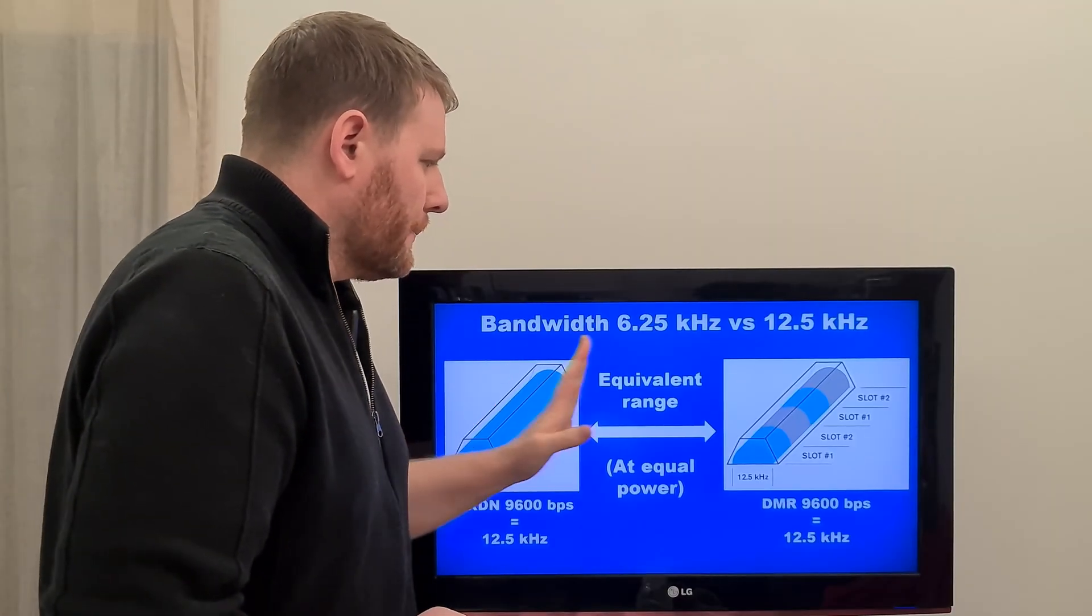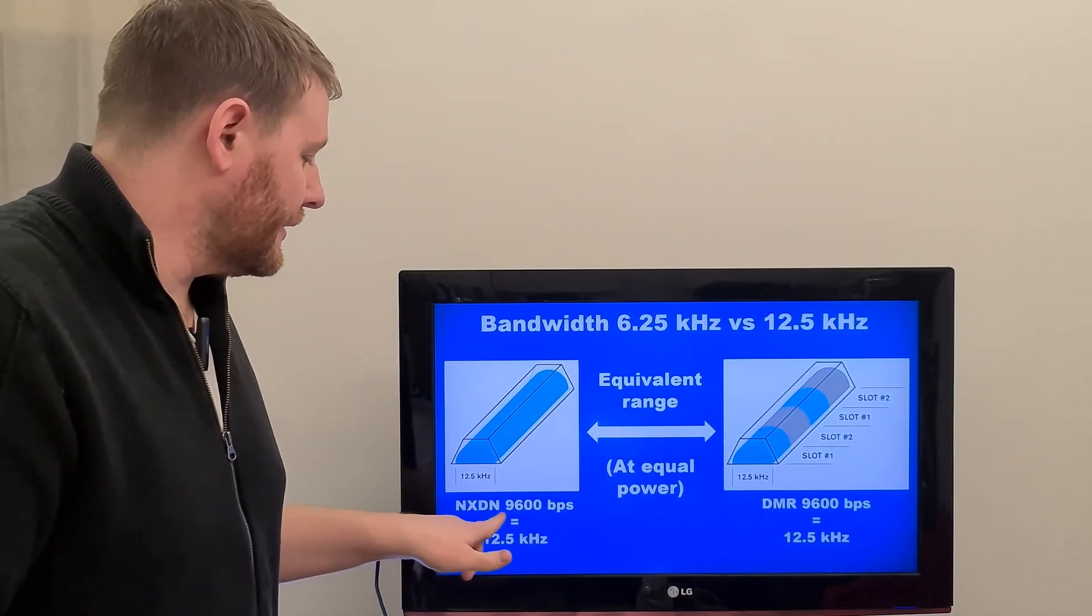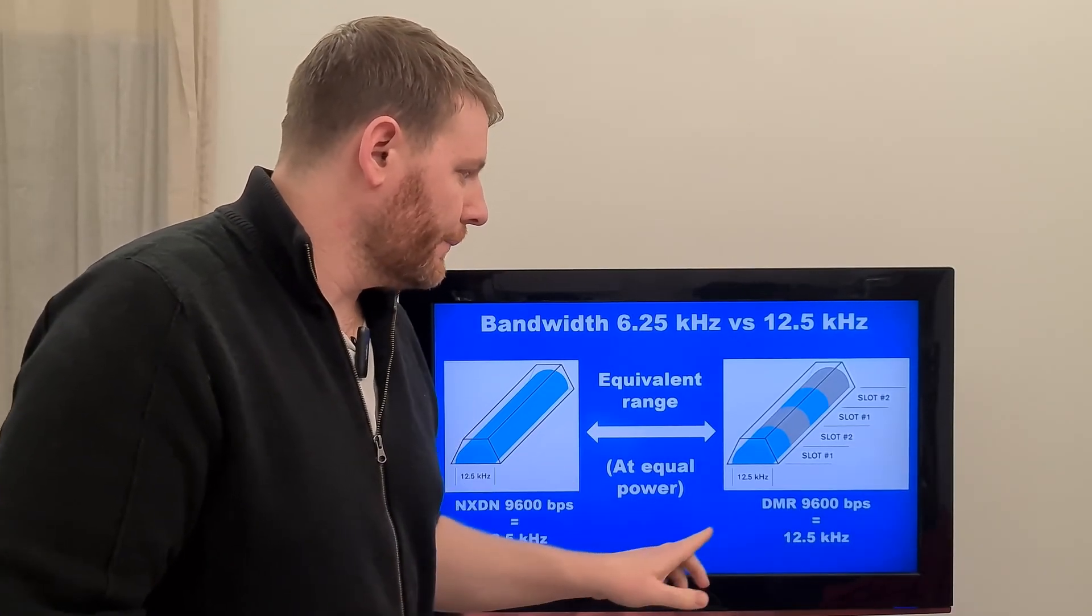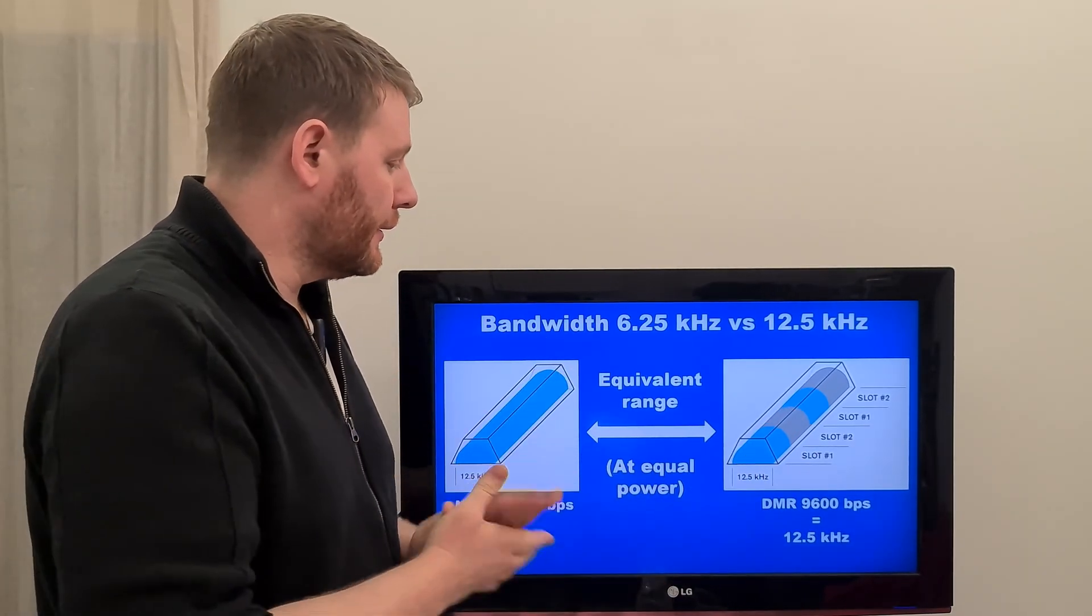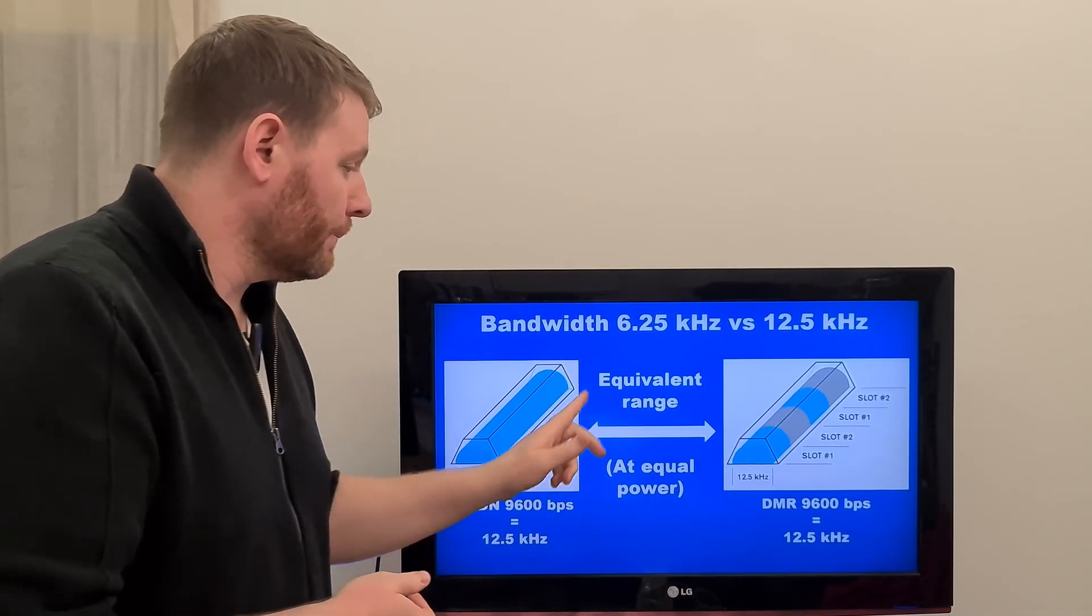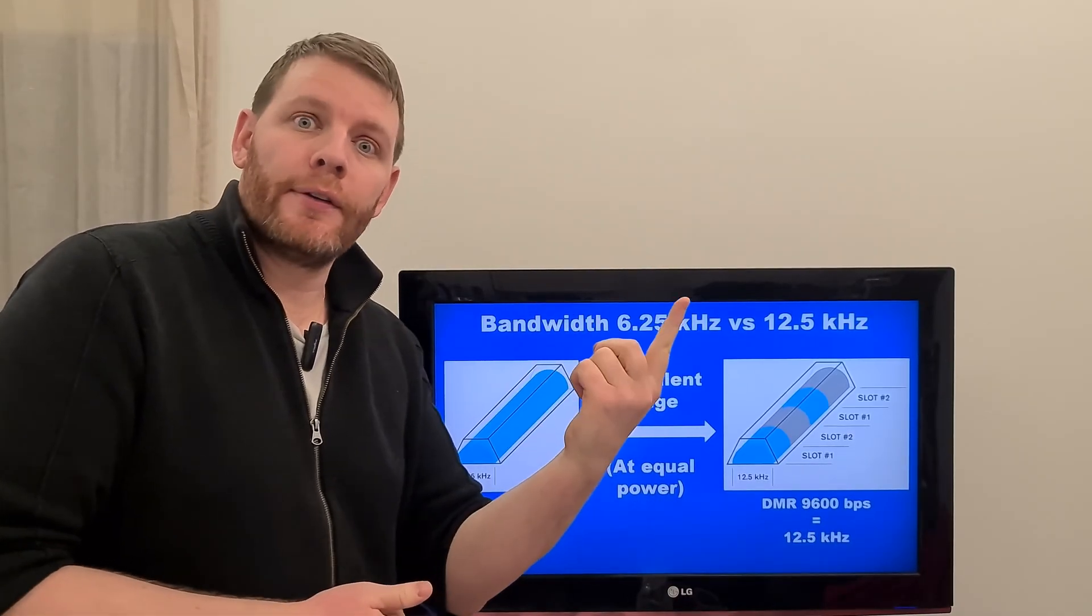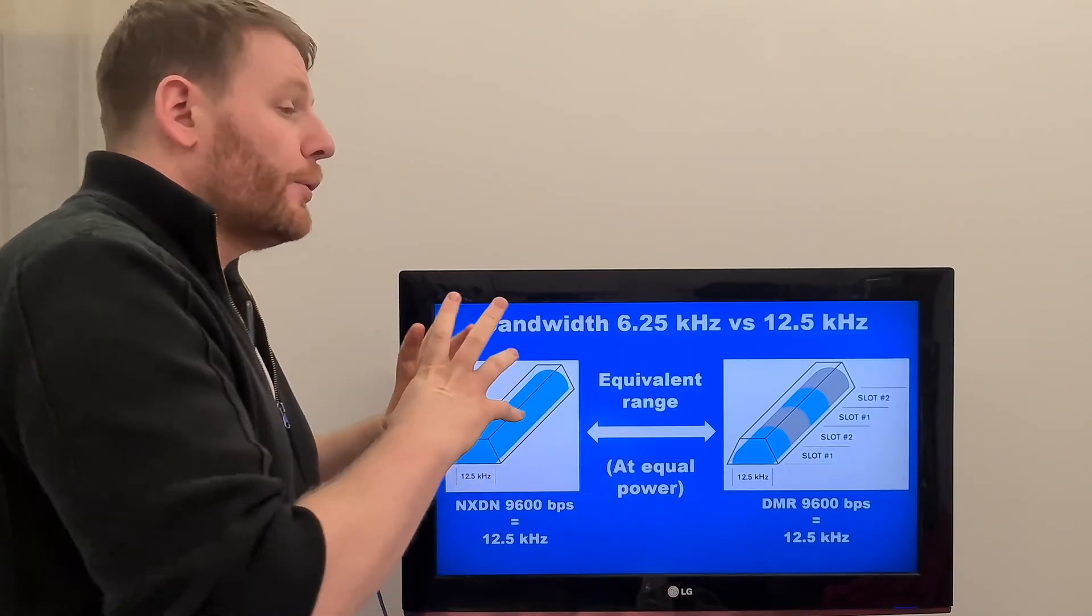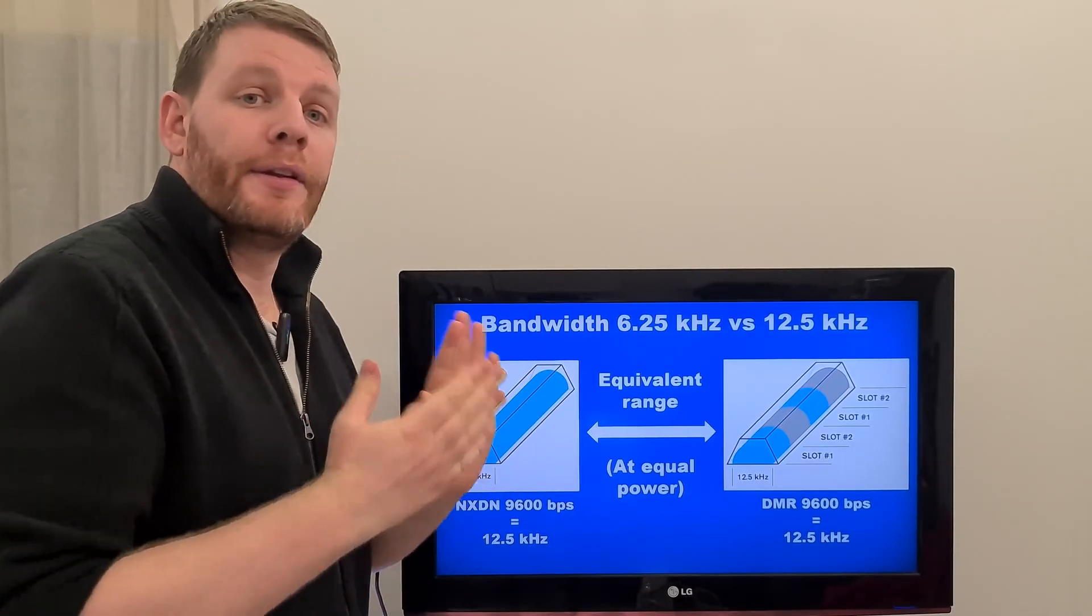So when you compare the 12.5 kHz by using NXDN 9.6 kilobit per second or DMR, DMR and NXDN have the equivalent range. One is FDMA, the second is TDMA, but when you use equal power and I forgot here, equal frequency or equal range of frequency, the range, the coverage range is equivalent using NXDN or DMR.